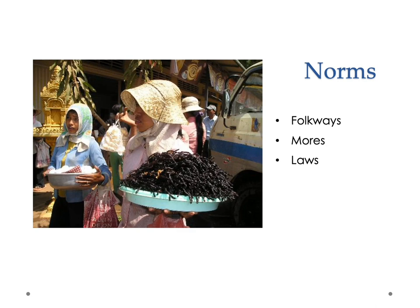Norms can be thought of in three ways: folkways, mores, and laws. Folkways are the least serious set of norms — the most casual ones that can be humorous or silly, and they're typically linked to custom or tradition. These are things that aren't very aggressively policed, but are things that we just kind of tend to do. Violations of folk traditions aren't typically seen as massive violations of expectations for actions. Mores, by contrast, are more codified than folkways and they're typically more seriously policed.